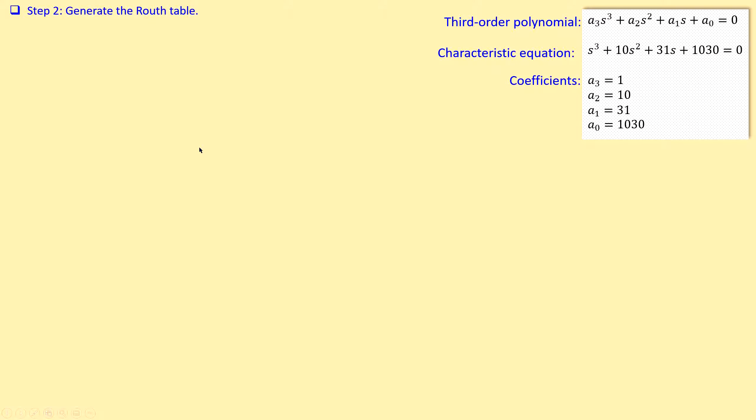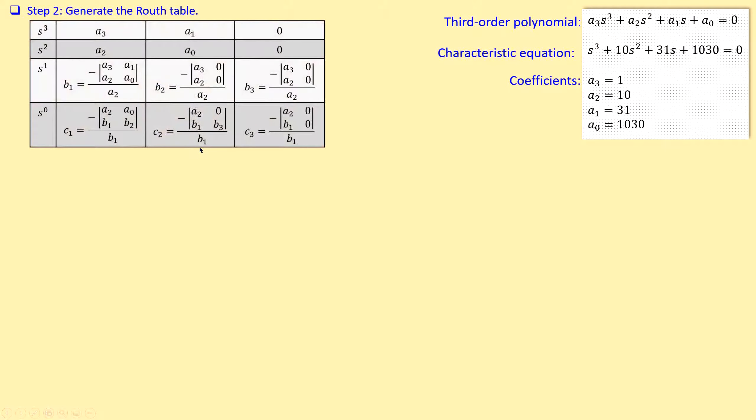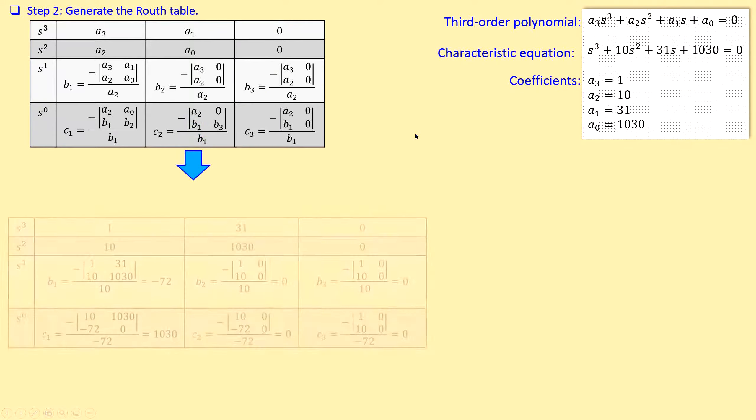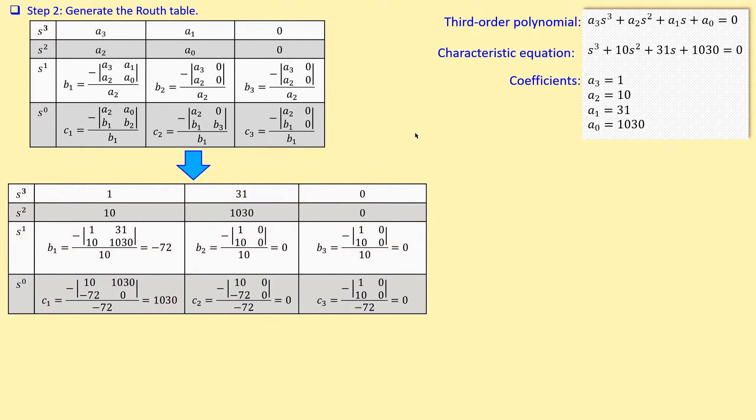If I move on, I need to generate the Routh table. This is actually for the third order system. If I substitute the values for a₃, a₂, a₁, and a₀ in here, I get the following situation. In addition, I need to check later in the next step the condition here in the first column. I have to also calculate b₁ and c₁.